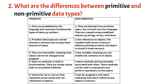The actual value of a primitive variable is stored directly in memory. Non-primitive data types are references to objects. The variable itself stores a memory address pointing to where the object is stored. The actual object is stored in the heap memory. C - Behavior: Primitive data types are immutable, meaning their values cannot be changed once assigned. If you assign a new value to a primitive variable, it creates a new memory location. Non-primitive data types are mutable, meaning you can modify the contents of an object. Multiple variables can reference the same object, and changes made through one variable will be reflected in all references.